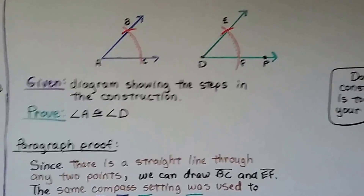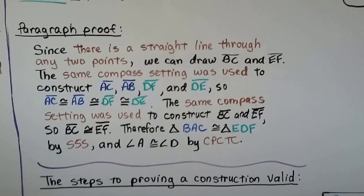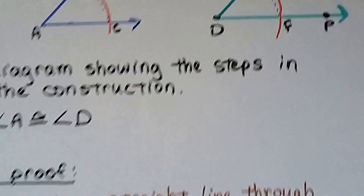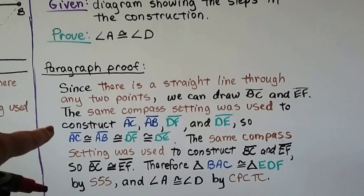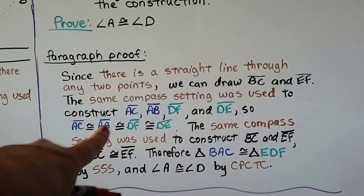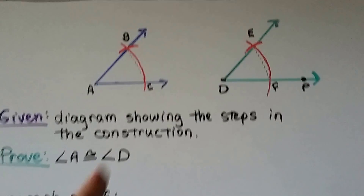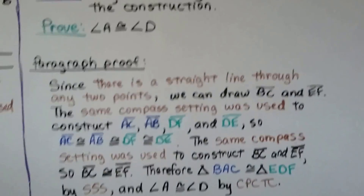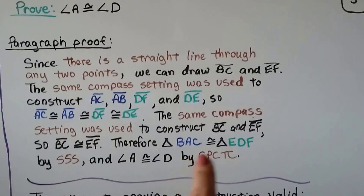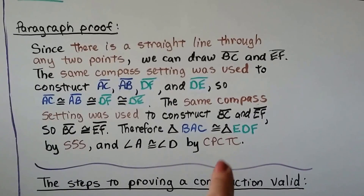Given the diagram showing the construction steps, we need to prove angle A ≅ angle D. Using a paragraph proof: since there is a line through any two points, we draw segments BC and EF. The same compass setting was used to construct AC, AB, DF, and DE, so they are all congruent. The same compass setting was also used to construct BC and EF, so BC ≅ EF. Therefore triangle BAC ≅ triangle EDF by SSS, and angle A ≅ angle D by CPCTC.